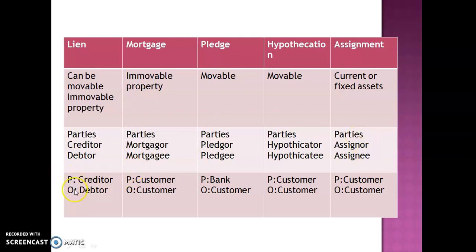Regarding possession and ownership: in case of lien, possession is with the creditor and ownership with the debtor. In case of mortgage, both possession and ownership remain with the customer. In case of pledge, possession transfers to the bank while ownership remains with the customer. In case of hypothecation, both possession and ownership remain with the customer.